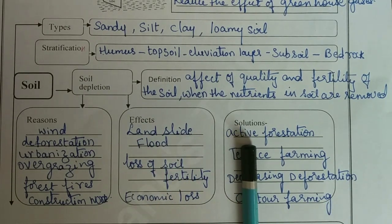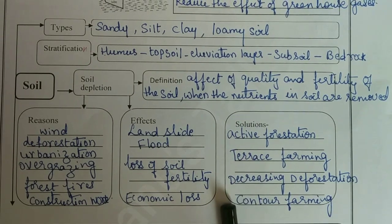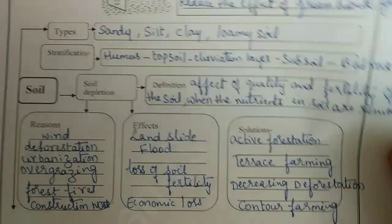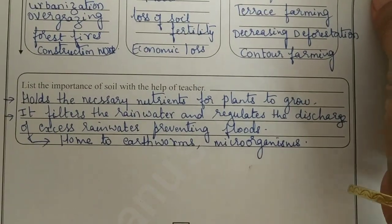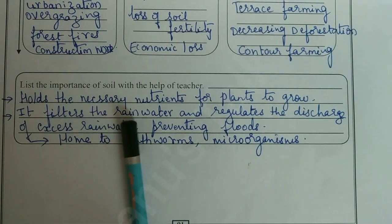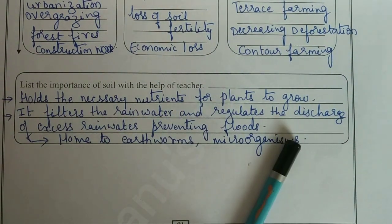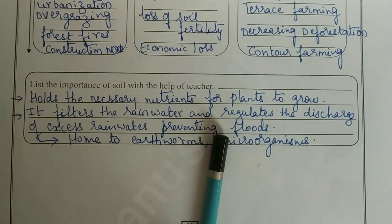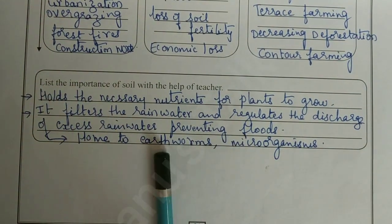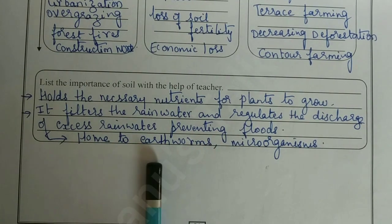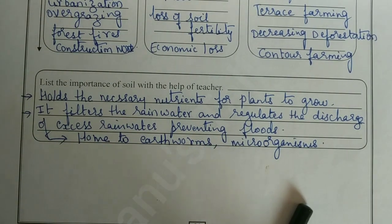Solutions: active forestation, terrace farming, decreasing deforestation, and contour farming. The importance of soil: holds the necessary nutrients for plants to grow, filters the rainwater and regulates the discharge of excess rainwater, preventing floods.